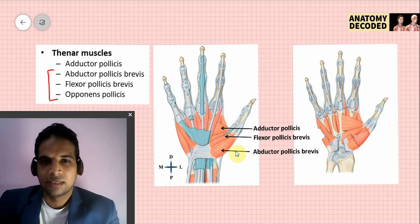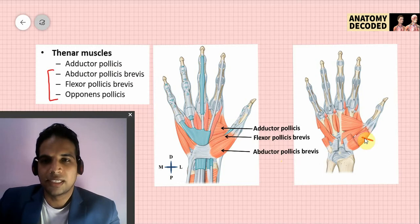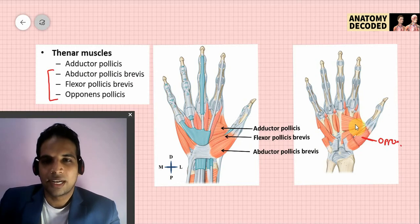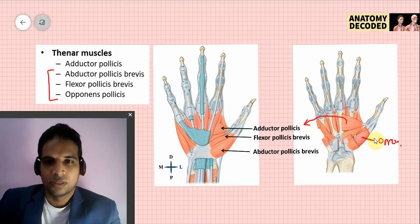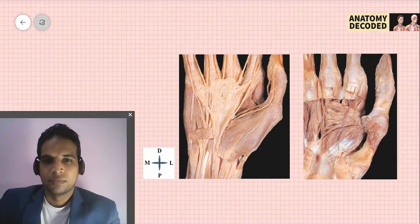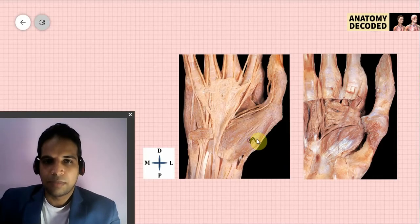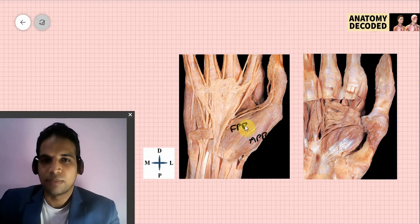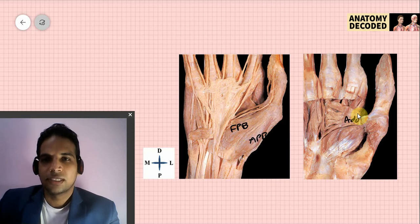In the superficial part, two muscles are seen: abductor pollicis brevis on the lateral aspect and flexor pollicis brevis on the medial aspect. When we retract these two muscles, a deeper muscle is seen — opponens pollicis. A horizontal muscle with a transverse head and an oblique head is adductor pollicis. In the dissected image: abductor pollicis brevis, flexor pollicis brevis, opponens pollicis deep to those, and adductor pollicis with its transverse and oblique heads.